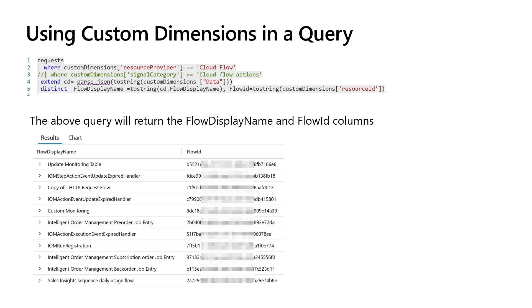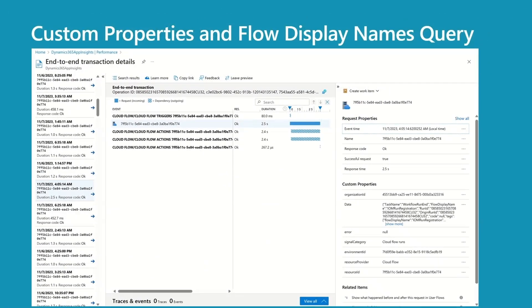Without it, you need to go to the Makers Experience to figure this out. Let's have a quick look at the query — in the last slide we spoke about the data object, so here I'm reading the flow display name from the data object. Let's look at the custom properties — these belong to a flow run. We have organization ID, data, error, signal category, environment ID, resource provider, and resource ID. The resource ID represents the flow ID. The name field also represents the flow ID.